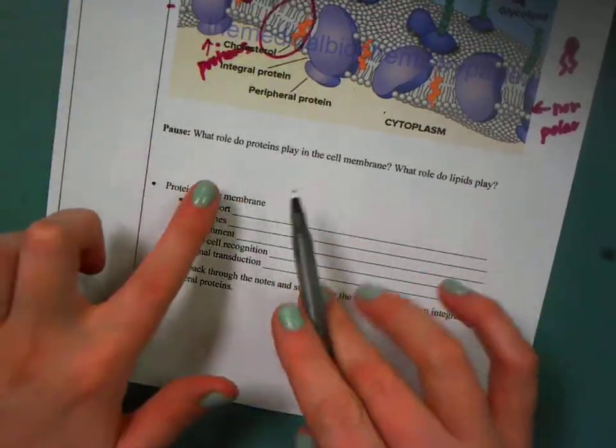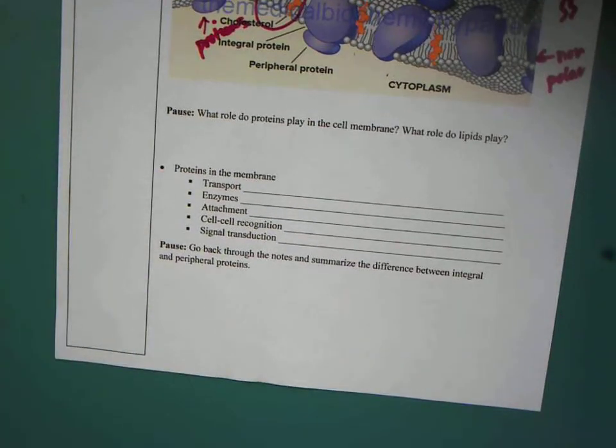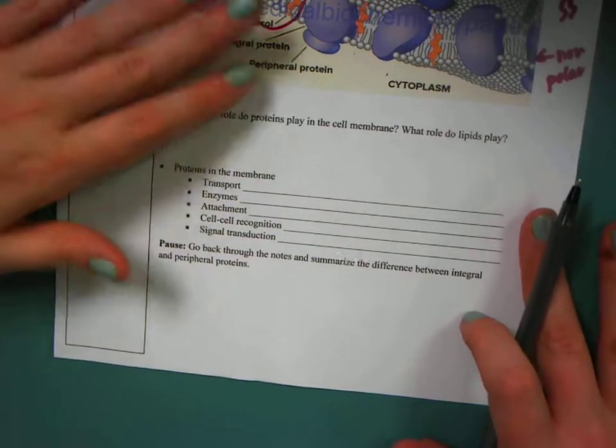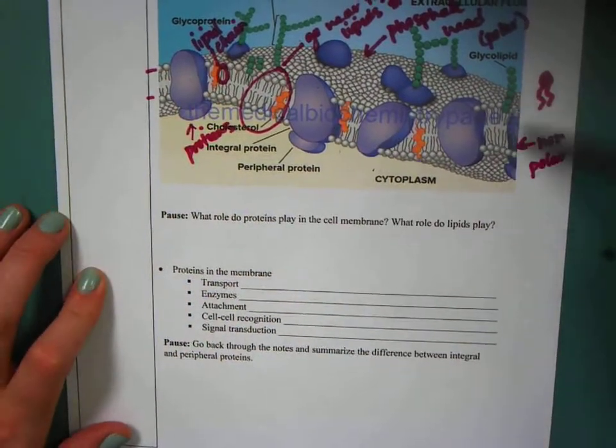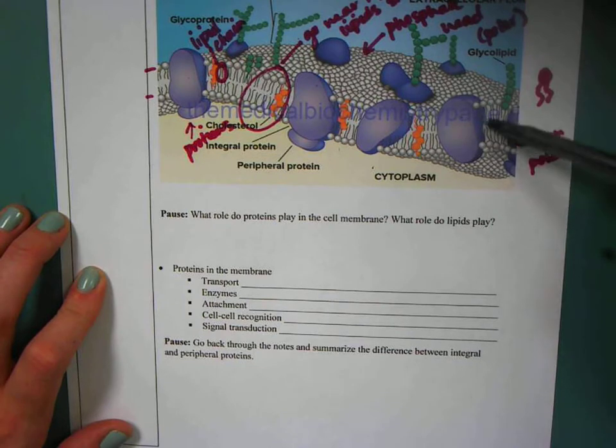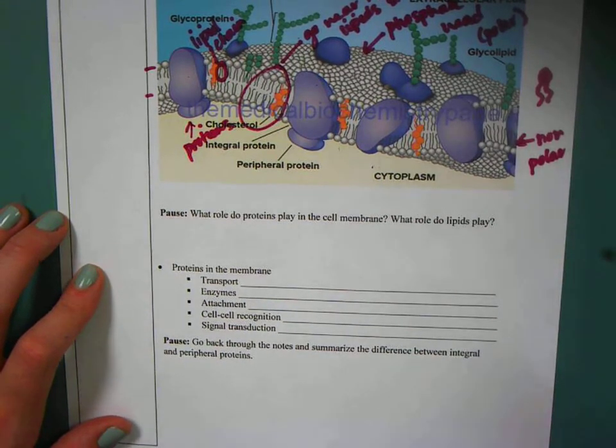So thinking about the different types of proteins. We've already talked about all the functions of proteins. There are actually different types within this cell membrane. So just to be clear, you have this phospholipid bilayer, and inside of that little bilayer, every once in a while we'll have a protein. And those proteins can have different roles within the cell.